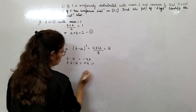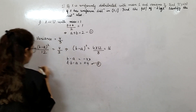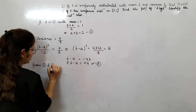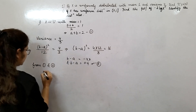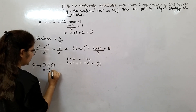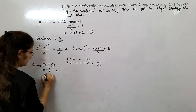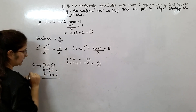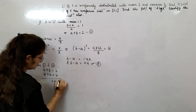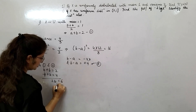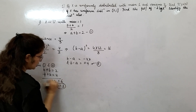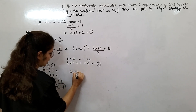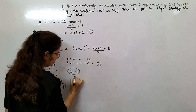From equations 1 and 2: a + b = 2 and -a + b = 4. By the elimination method, 2b = 6, so b = 3. When you put b = 3 back into equation 1, you get a = -1.